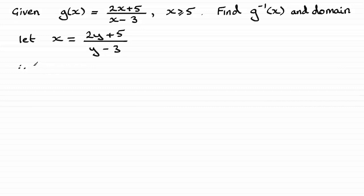So we're going to get x times all of y minus 3 and that's going to give me xy minus 3x and that's going to leave me with 2y plus 5.